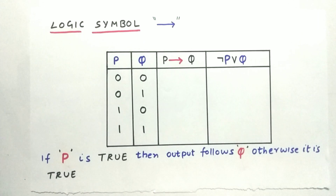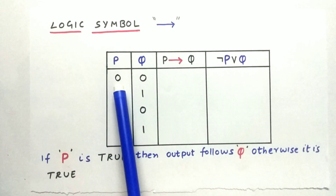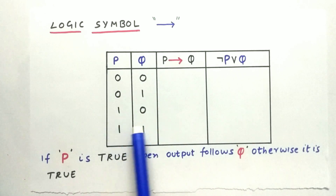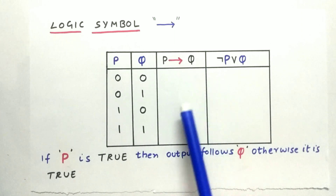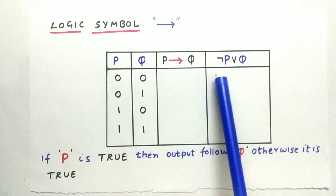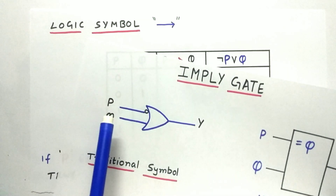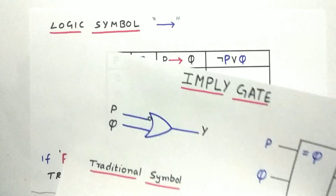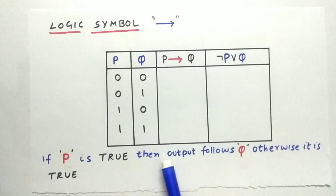The implied gate is represented by an arrow symbol — that is, P implies Q. The inputs are: 0,0 / 0,1 / 1,0 / 1,1 and this would be the output P implies Q. We can write the output as NOT of P OR Q, as shown in the figure. The functionality of the implied gate boils down to a single statement: if P is true, then the output follows Q; otherwise, the output is always true.